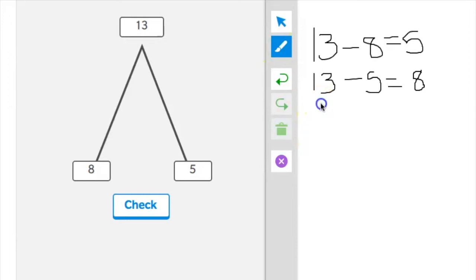With each math mountain, your student should be able to write four equations. The total minus an add-in equals the other add-in and vice versa. Then, the add-in plus the add-in equals the total.